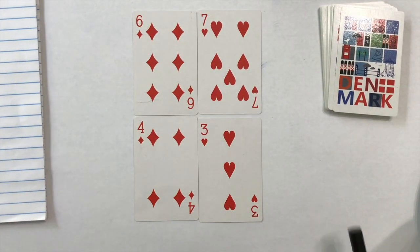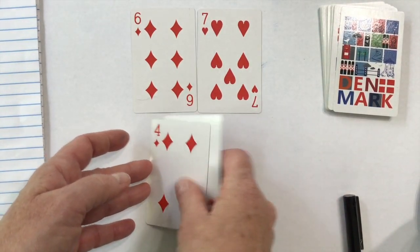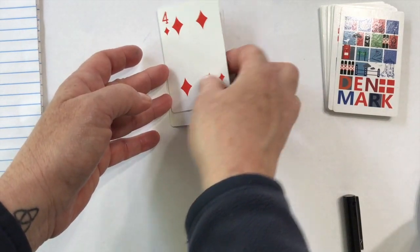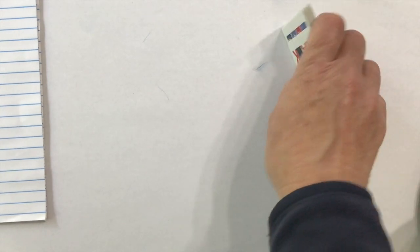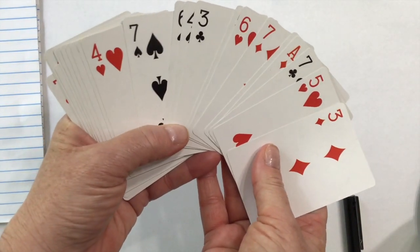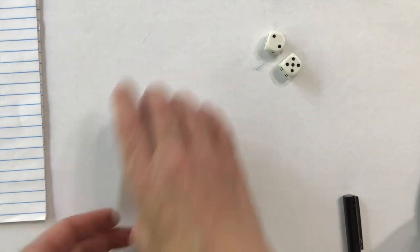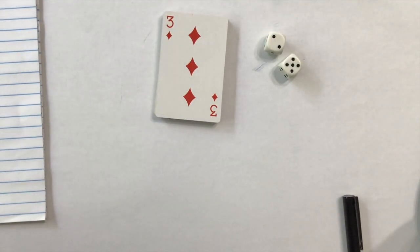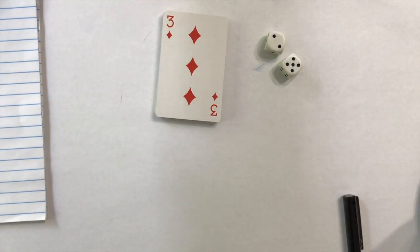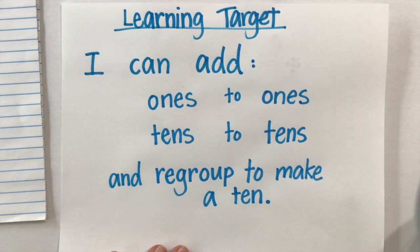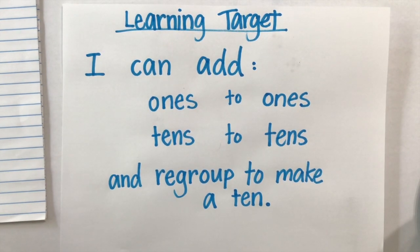So for today's practice, I want you to keep practicing. Keep making two-digit numbers, either with your cards, numbers 1 to 7, or with your dice. Practice your two-digit addition. Sometimes you're going to have to regroup and sometimes you're not. Have fun.